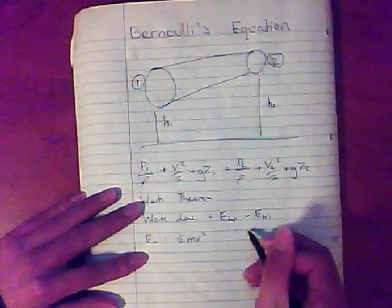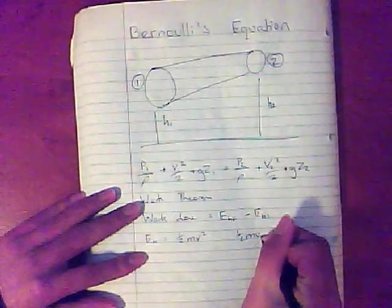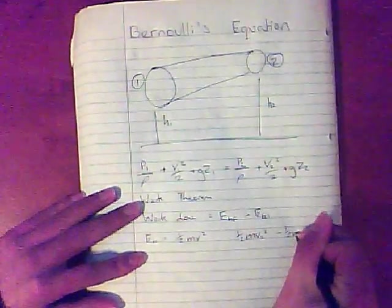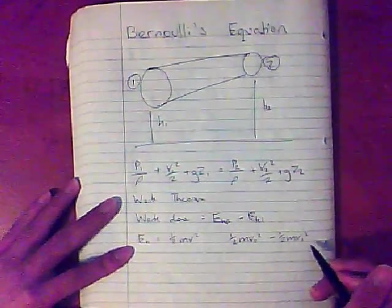If you remember from physics that kinetic energy can be written as a half mv squared. So instead of saying Ekf minus Eki, I could just say a half mv2 squared minus a half mv1 squared, where v2 is the final speed, and v1 is initial speed.